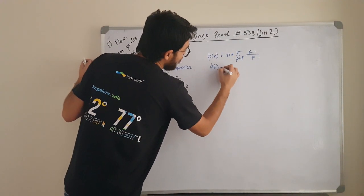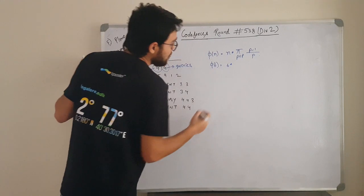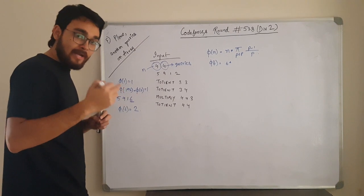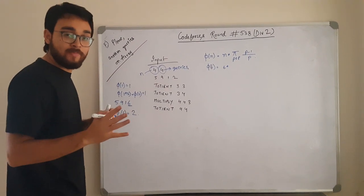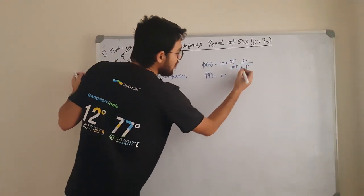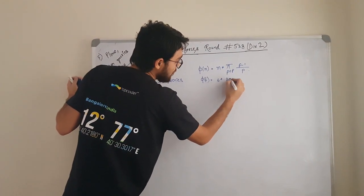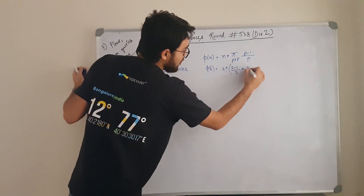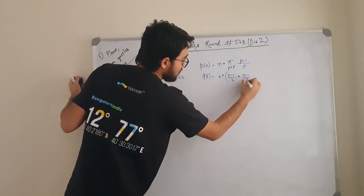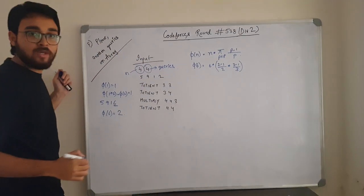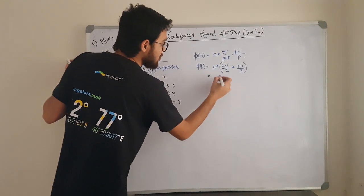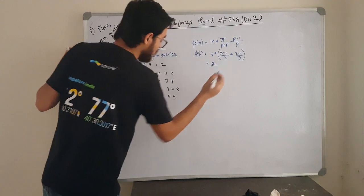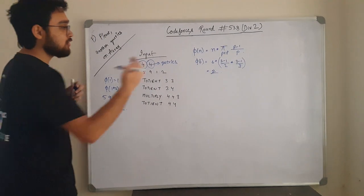What is φ of 6 going to be? It is going to be 6 into... How many primes do we have in 6? We have 2 and 3, these are the only 2 primes. So, (2 - 1) / 2 into (3 - 1) / 3. What is it going to be? It is going to be 6, 6 got cancelled, 1, 2. It is going to be 2, which we got here. So this is the formula.